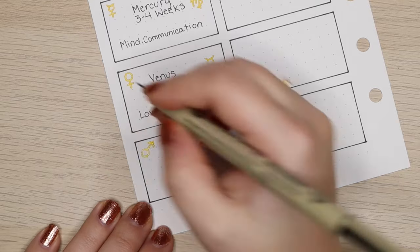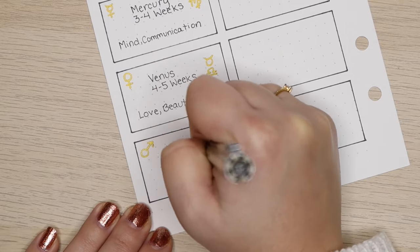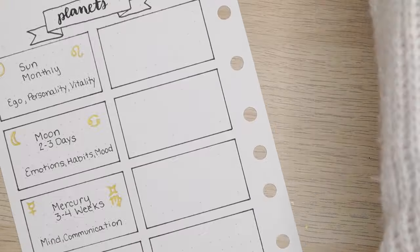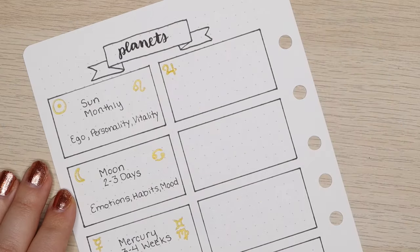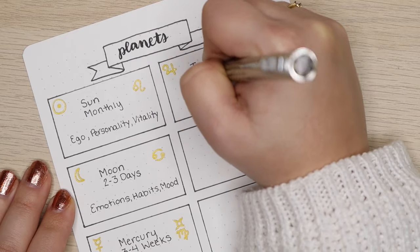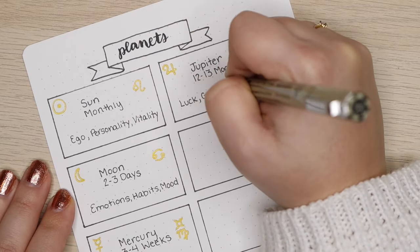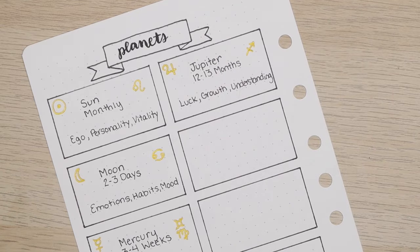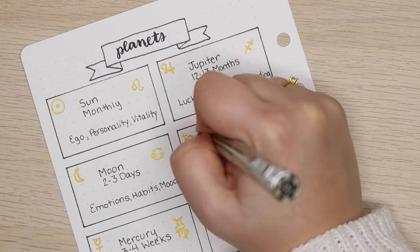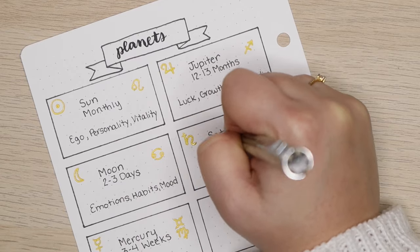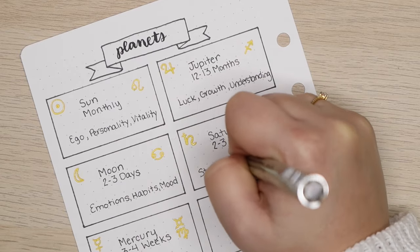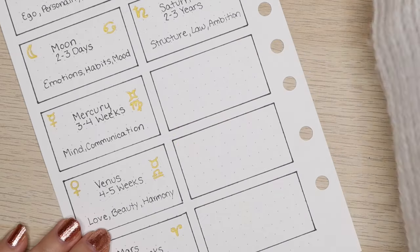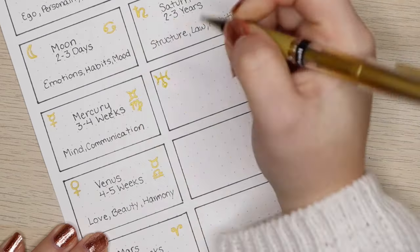When most of us learn about astrology for the first time, the first thing we do is look up our zodiac sign, which is technically our sun sign and it tells us something about our personality. The moon actually moves through zodiac signs every two to three days, but it affects our emotions, our habits, and our moods. And if you wanted to, you could actually change your habits to fit the sign that the moon is in.